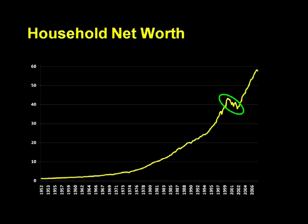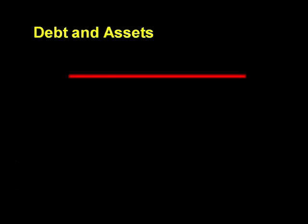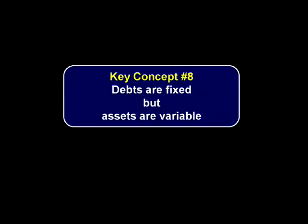And this decline in net worth leads to this observation. Debt is fixed. When you take on a debt, there it placidly sits, until and unless you make payments on it. Debts do not vary with the general economic conditions, or whether you get a raise or lose your job. Assets, on the other hand, are variable, sometimes gaining and sometimes losing value. And so this leads to the 8th key concept of the Crash Course: debts are fixed, but assets are variable.